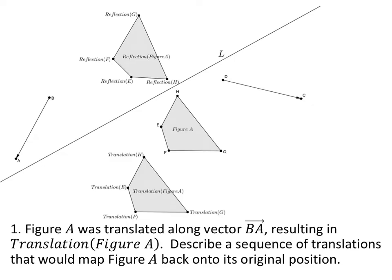Figure A, that's this one right here, has been translated along vector BA to give this new figure A prime. Describe a sequence of translations that would map figure A back onto its original position. What sequence of translations specifically would we use? Talk about that with your partner in 30 seconds.